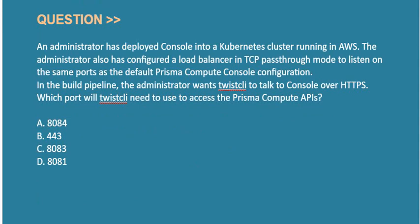Next question: An administrator has deployed console into a Kubernetes cluster running in AWS. The administrator has also configured a load balancer in TCP pass-through mode to listen on the same ports as the default Prisma Compute console configuration. In the build pipeline, the administrator wants TwistCLI to talk to console over HTTPS.